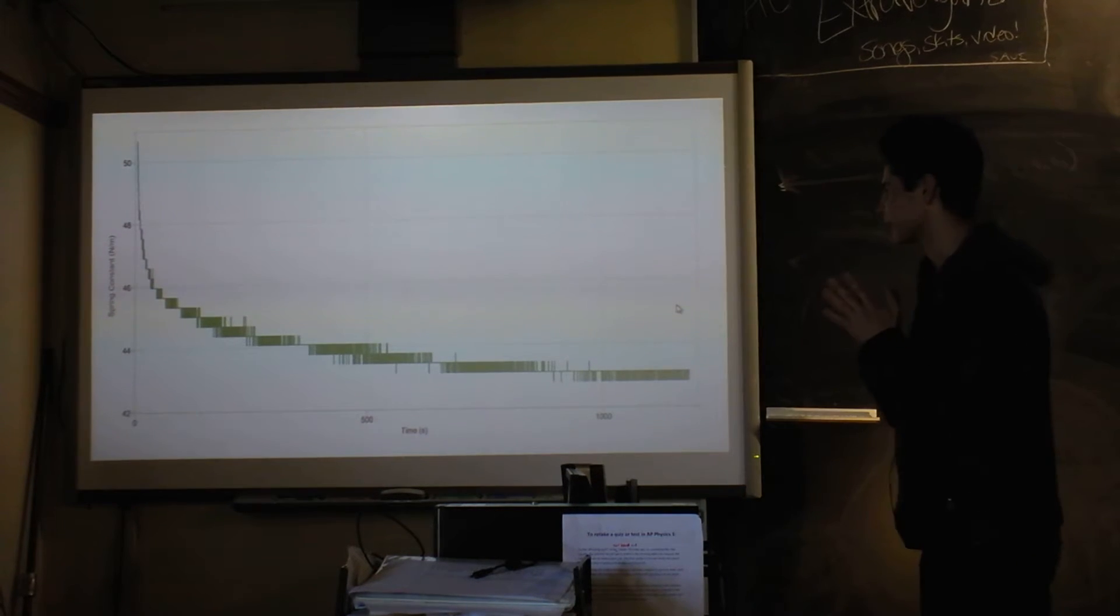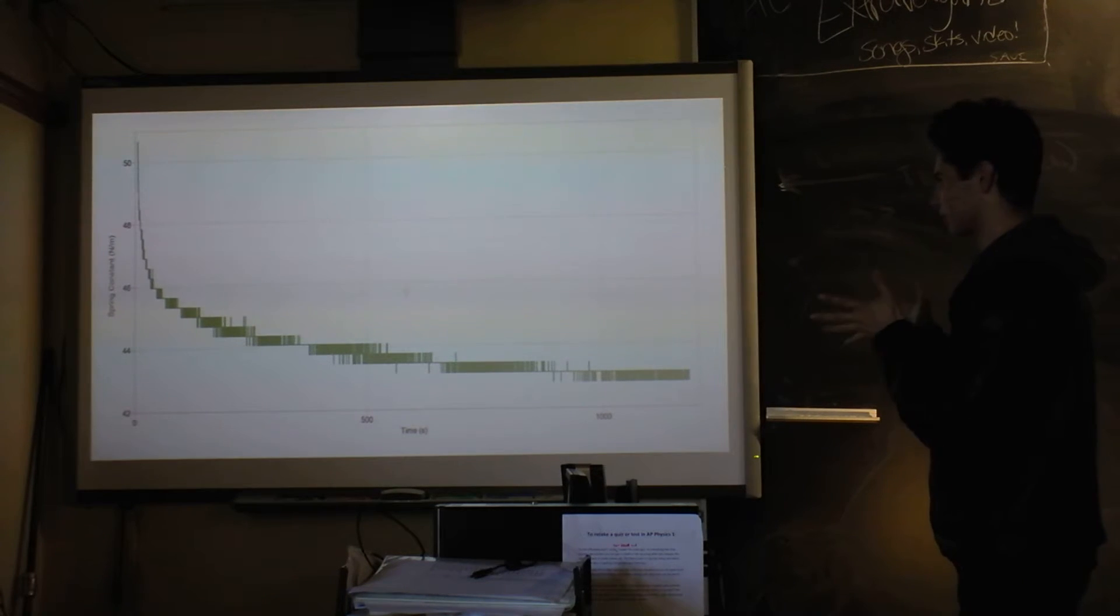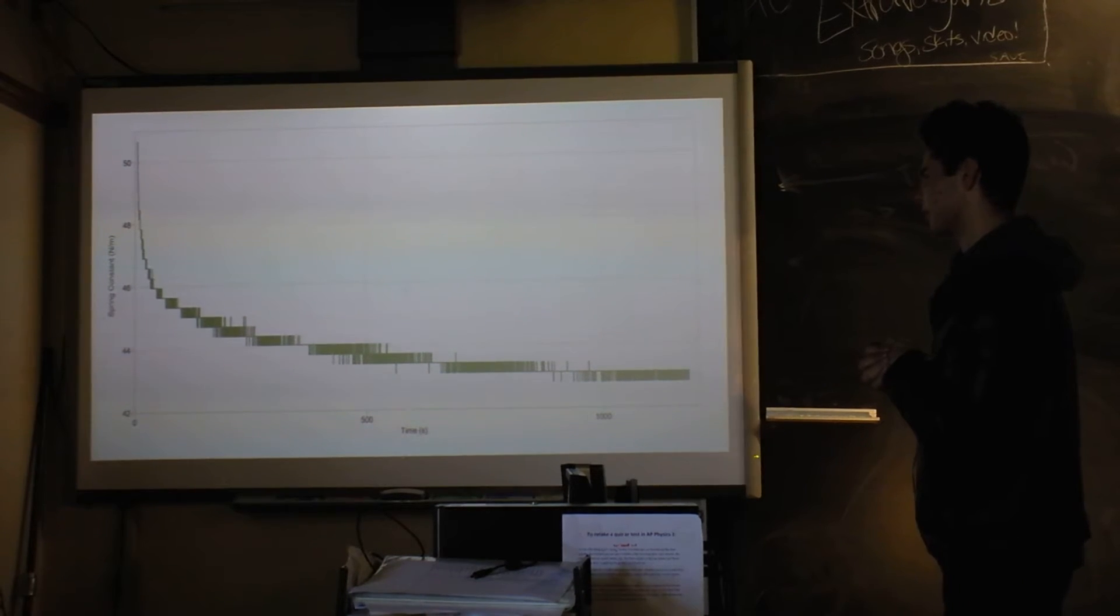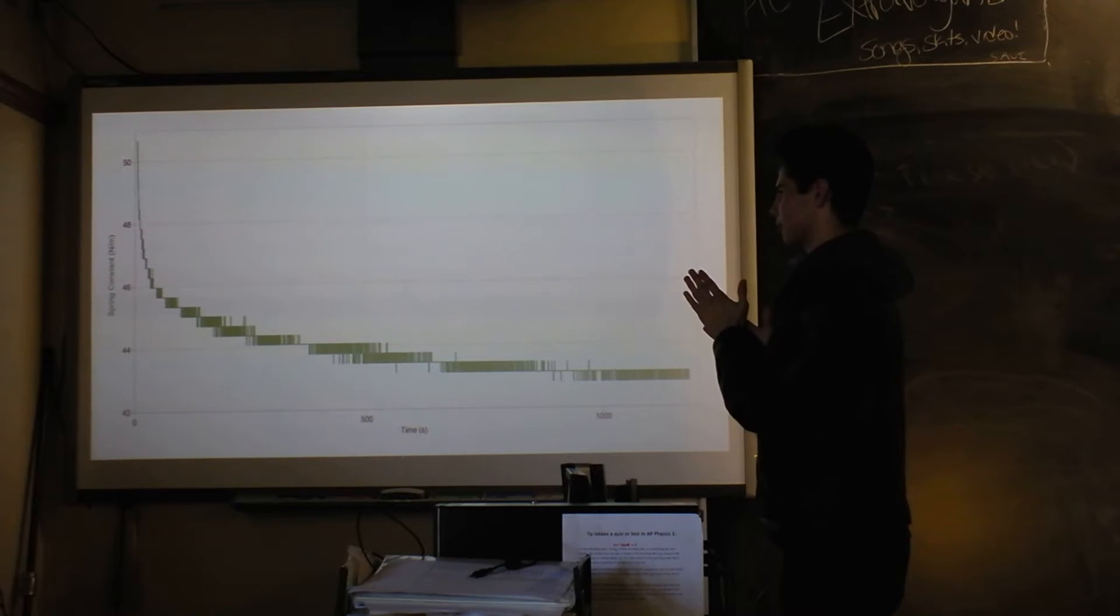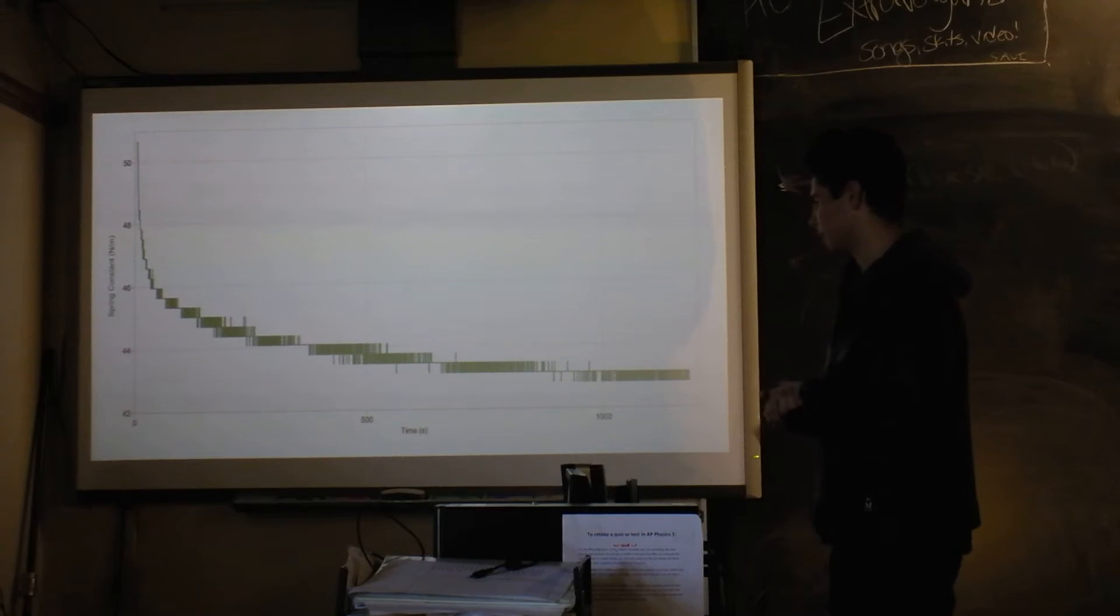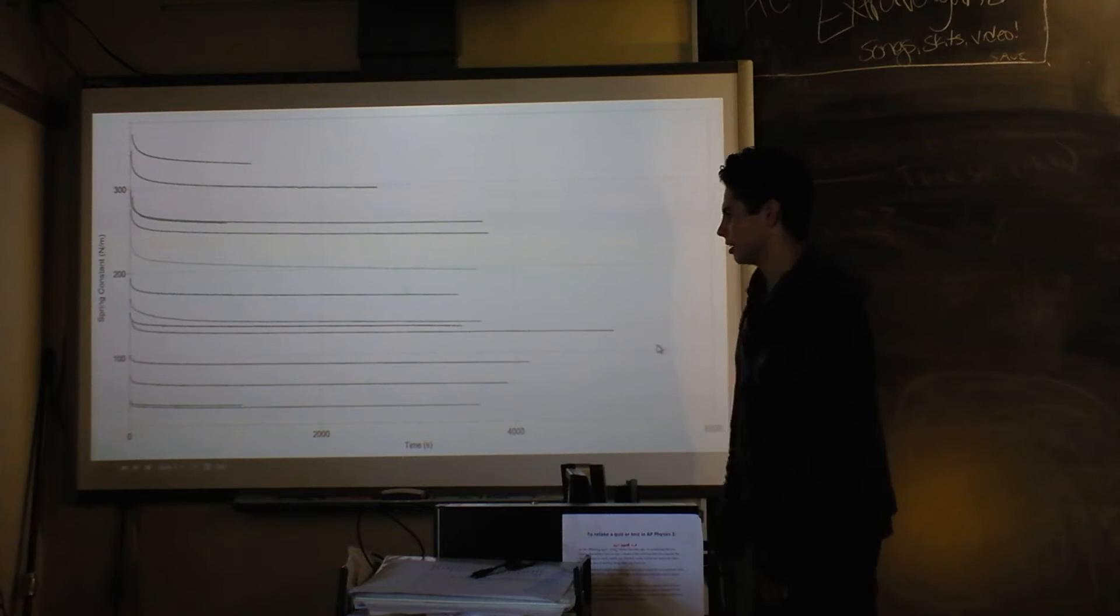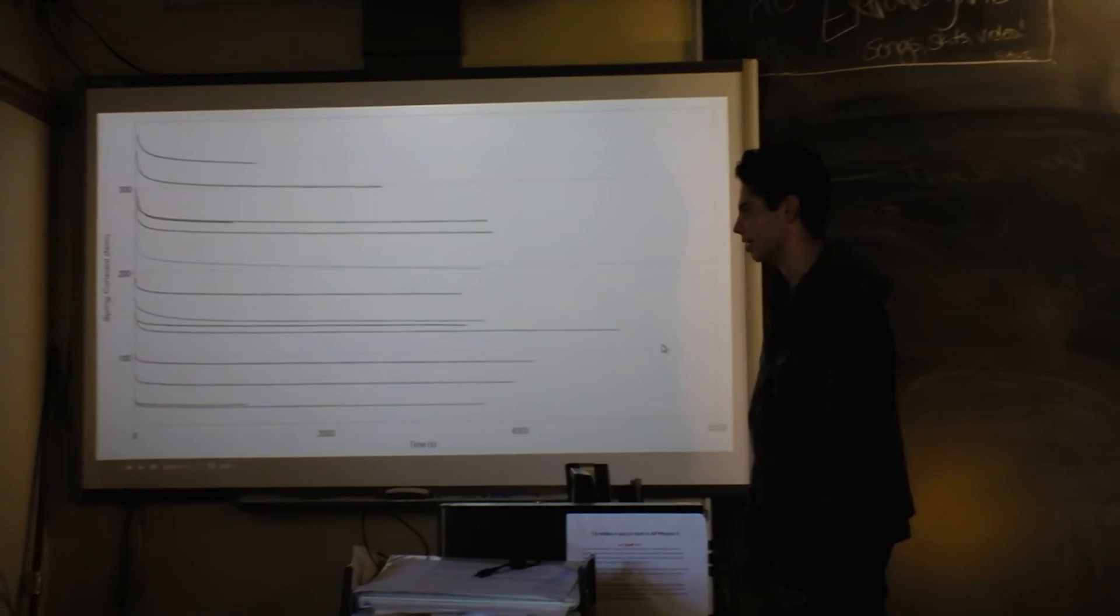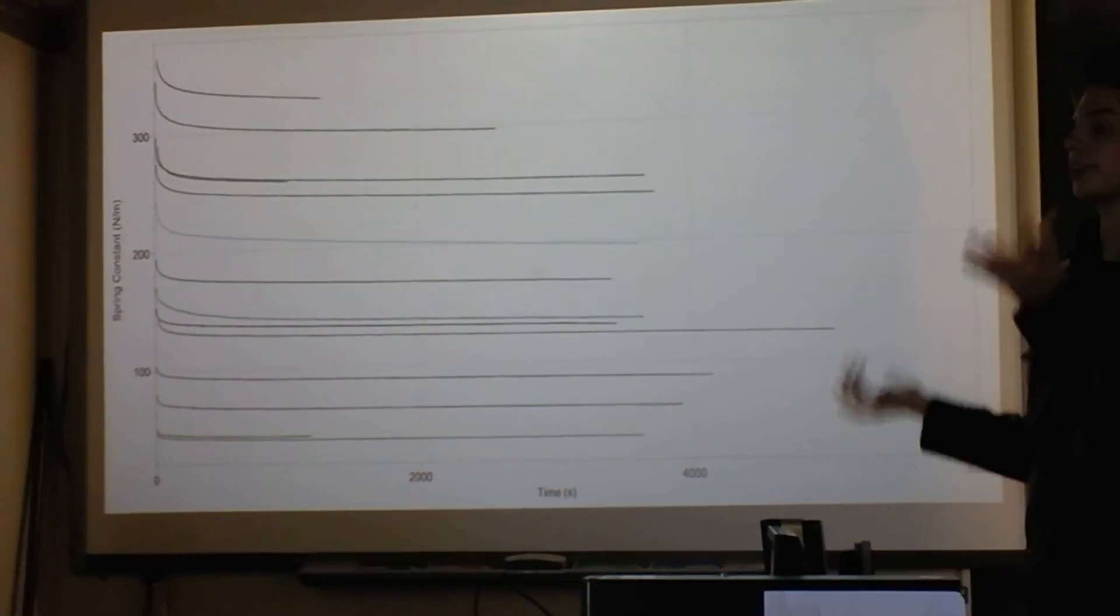But the interesting thing with rubber bands - when you do a force over time graph, you get something like this, which is counterintuitive because it's supposed to just be a flat line with no slope. And this happened with every rubber band, with every combination of rubber bands.